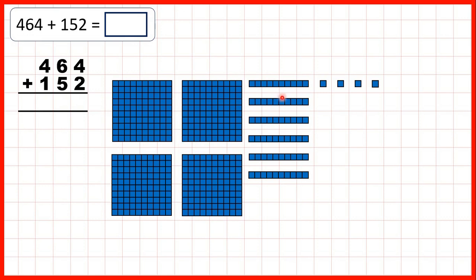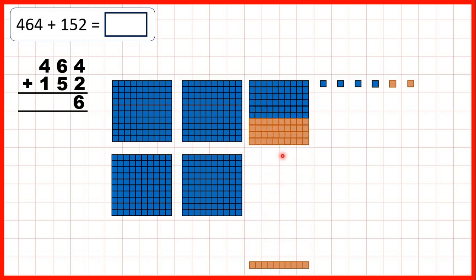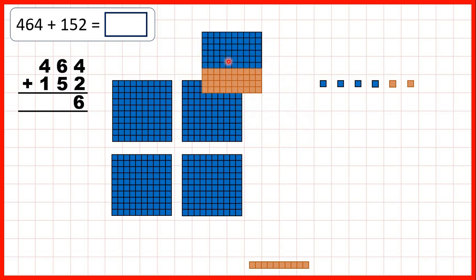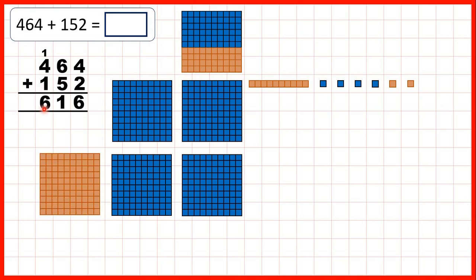Then we started with 464 and were adding 152. We can add 2 ones to give us 6 ones, then we need to add 5 tens. But when we do that we get 11 tens, and we can regroup 10 of those tens to make an extra 100. So we write 1 above the hundreds digits in our question, and because we now have one 10, we write 1 as the tens digit of our answer. So 6 plus 5 is 11, but 11 tens is the same as 1 hundred and 1 ten — that's why we write 1 above our hundreds digits. We've made 1 extra 100, we have 4 hundreds to start with, and we need to add 1 more hundred, giving us 6 hundreds altogether.